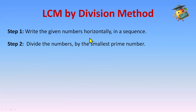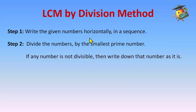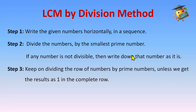If any number is not divisible — for example, if we have two or three numbers and only one is divisible by 2 — then the other number will be written as it is. If any number is not divisible, write that number as it is.